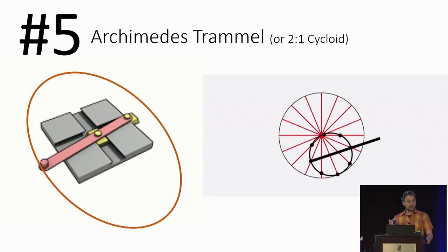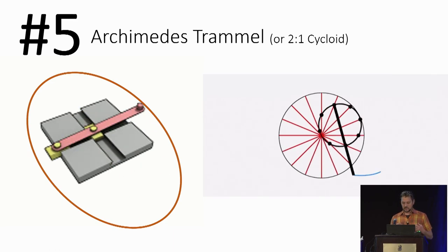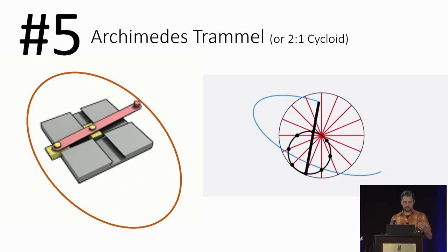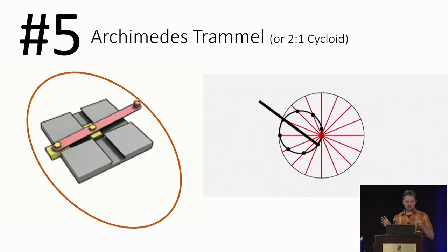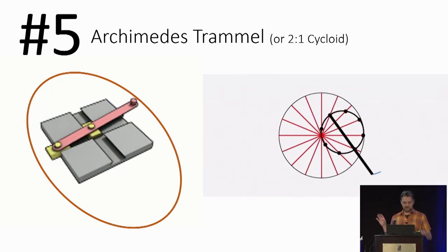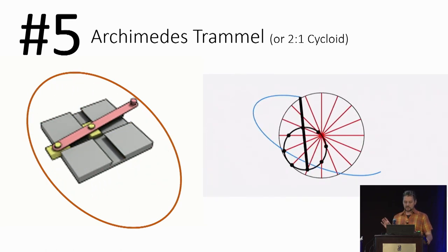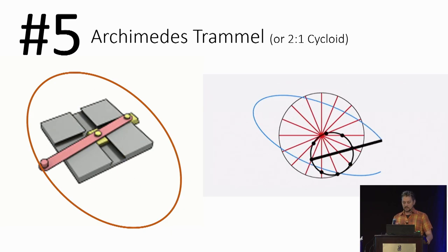These are some of my favorites. Some of you might be familiar with the Archimedes trammel. The way that I'm a mechanical engineer by training, I actually, the way I think of it, Archimedes trammel is it's a one to two cycloid in disguise, and you can see that on the right there. So both of these allow you to make ellipses by attaching essentially a marker to a mechanism that's rolling in this way. This is kind of the spirograph way of making an ellipse.